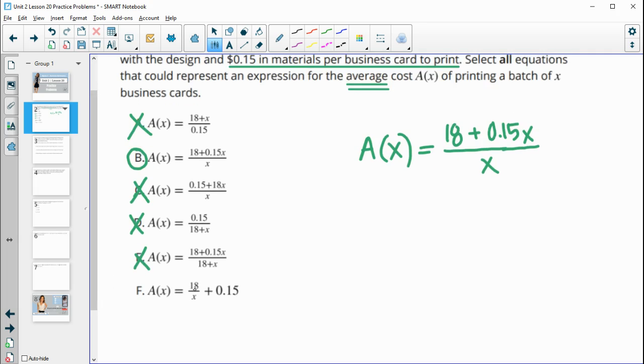And then part F looks like it's manipulated the equation. So let's make sure we decide if this is equivalent or not. In this case, we could do 18 divided by X, which is what they have, and then plus we would do this 15 cents per card divided by X, in which case these X's divide out to one. So we just get 18 divided by X plus 15 cents. So this would be an equivalent equation as well.